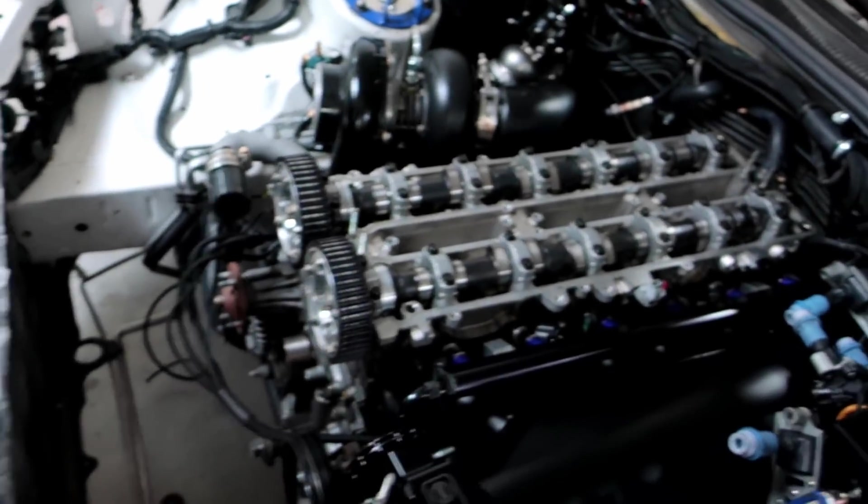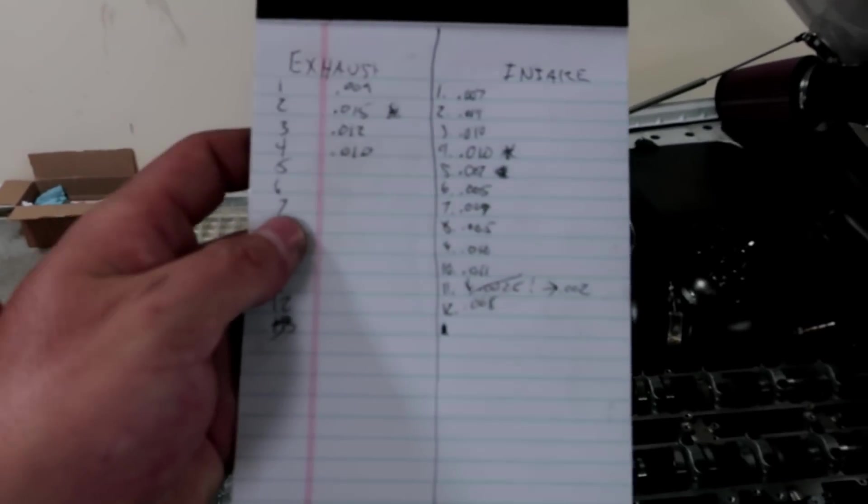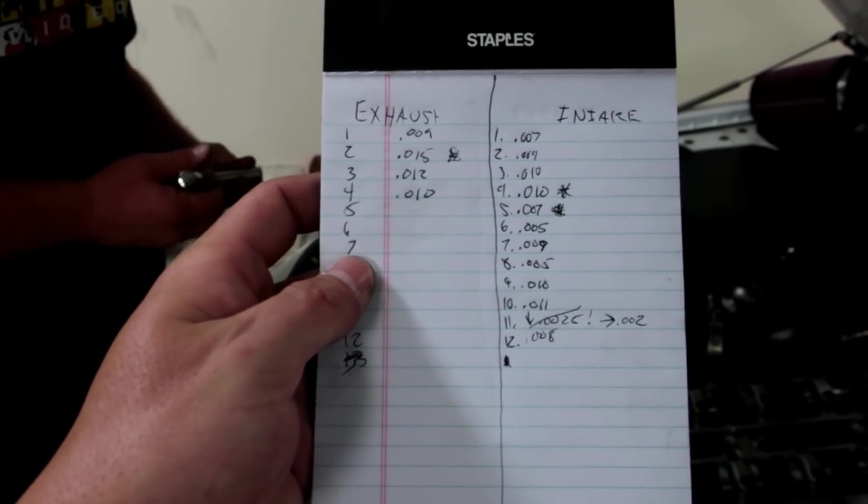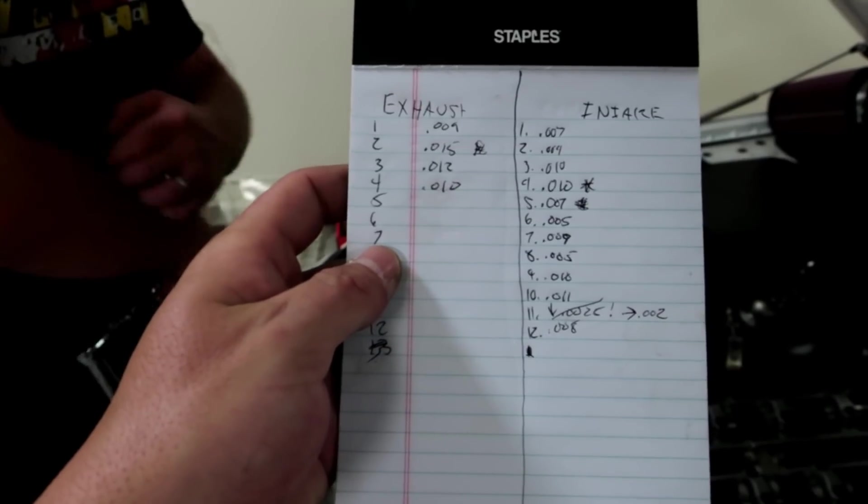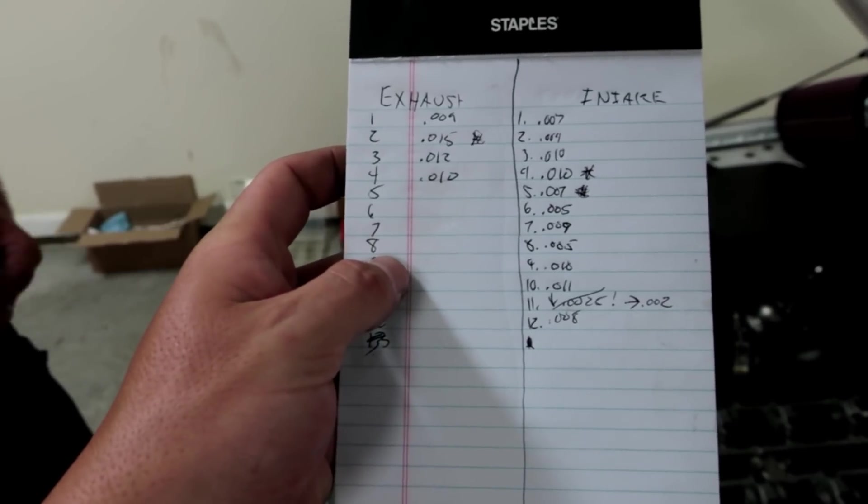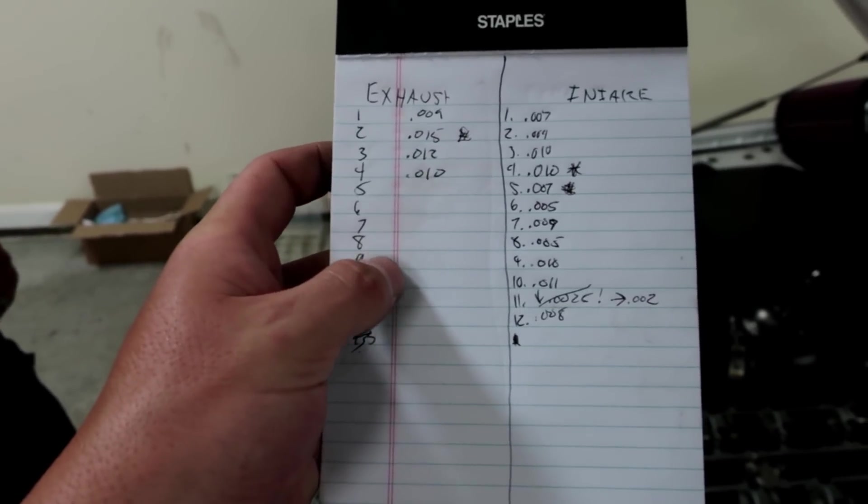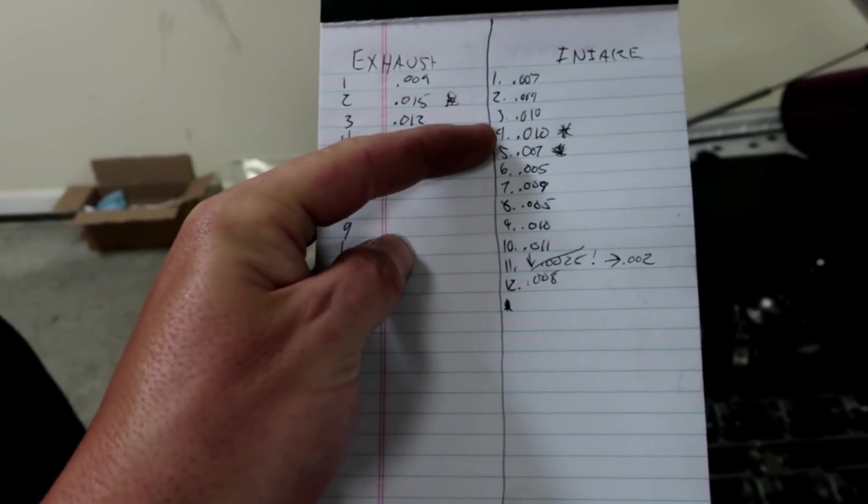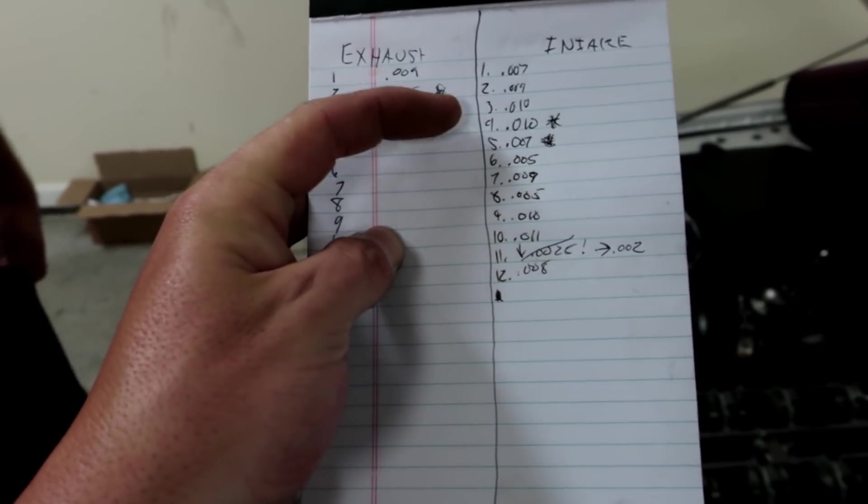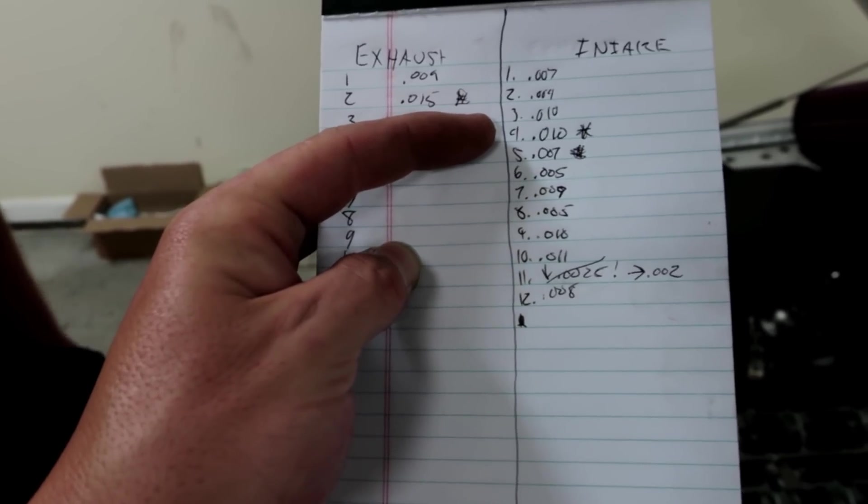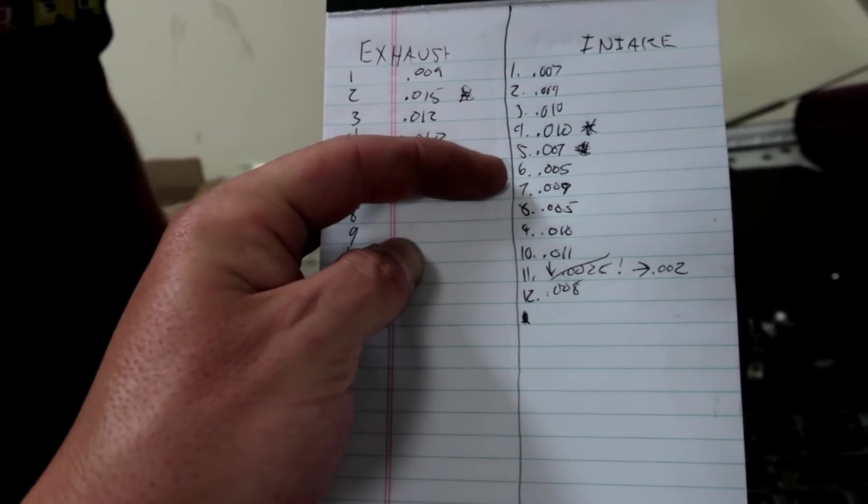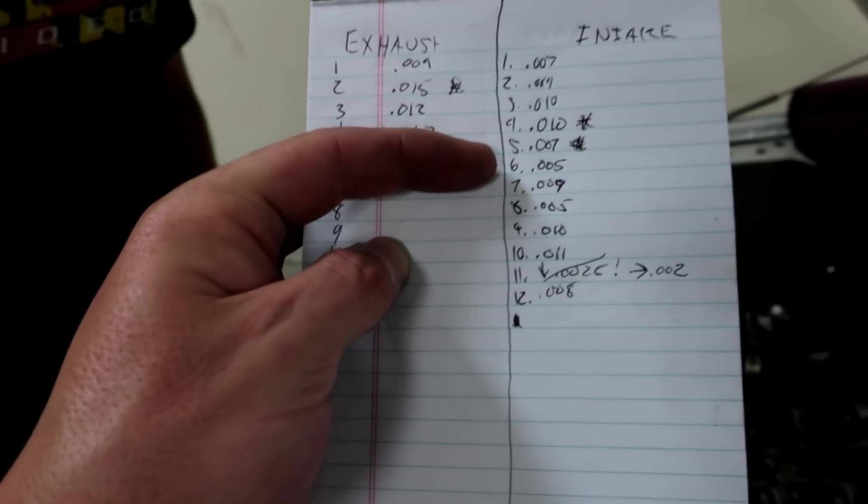Right now we're checking for clearances. So we're checking clearances between the cam and the actual bucket for the springs. We want to make sure there's plus or minus 2 thou from 10 thou. Ideally it'd be 0.010. You can be 0.008 or 0.012, anything above or below that is no good.